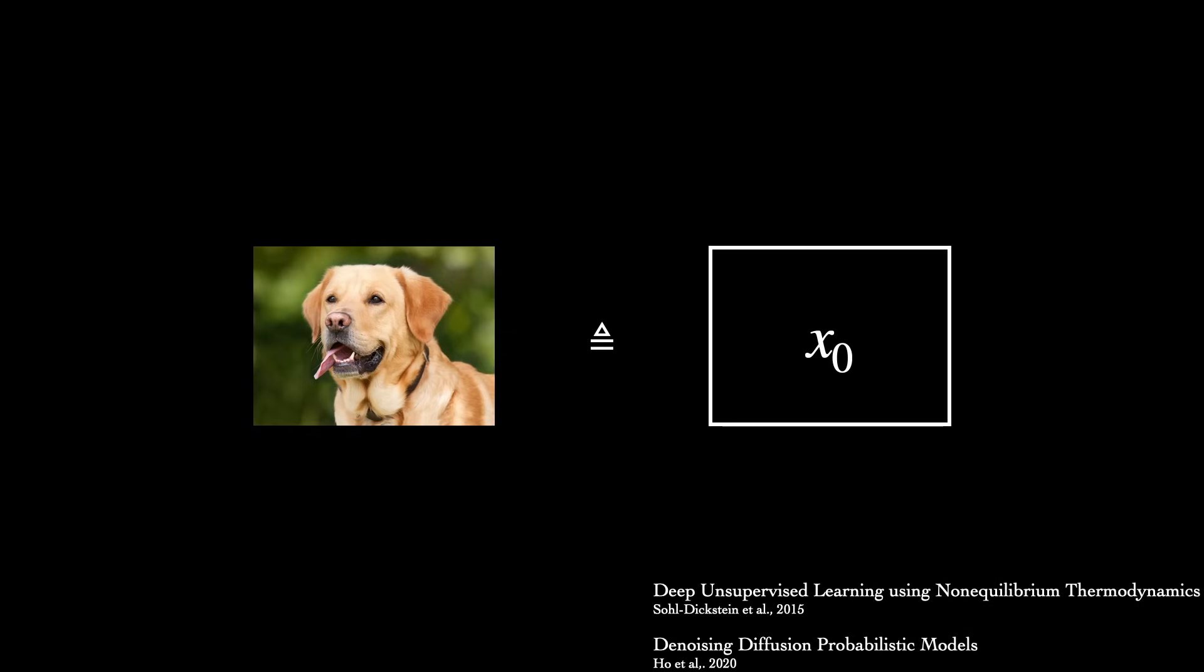We'll start with a sample from some target data distribution, like an image from a training set. Let's call this x0.